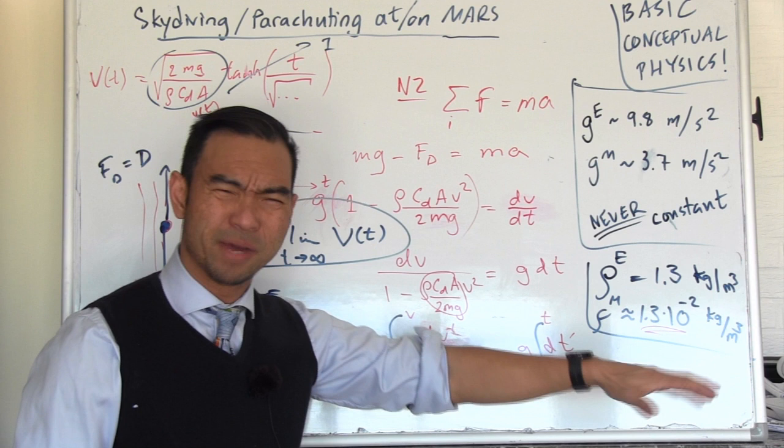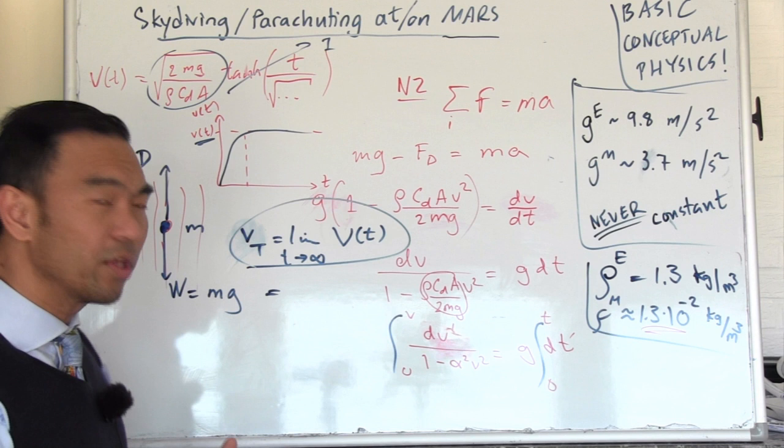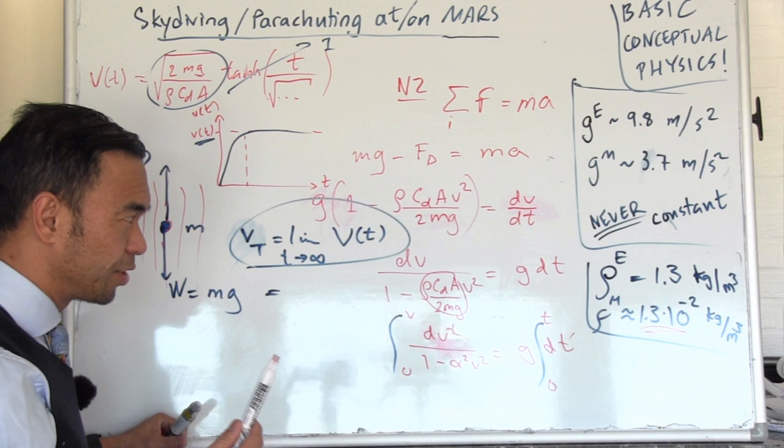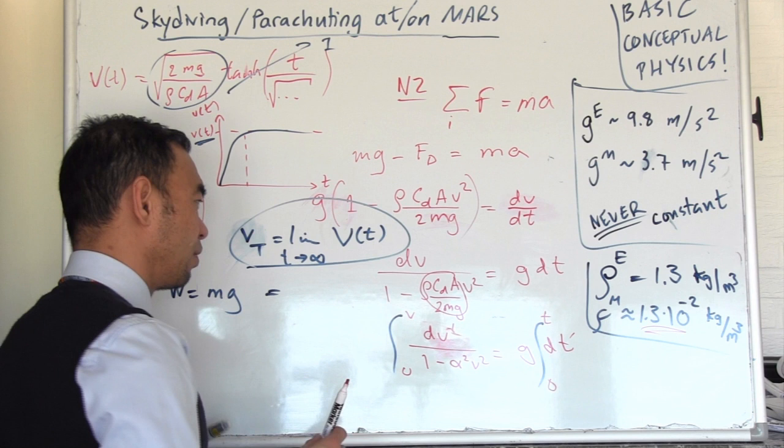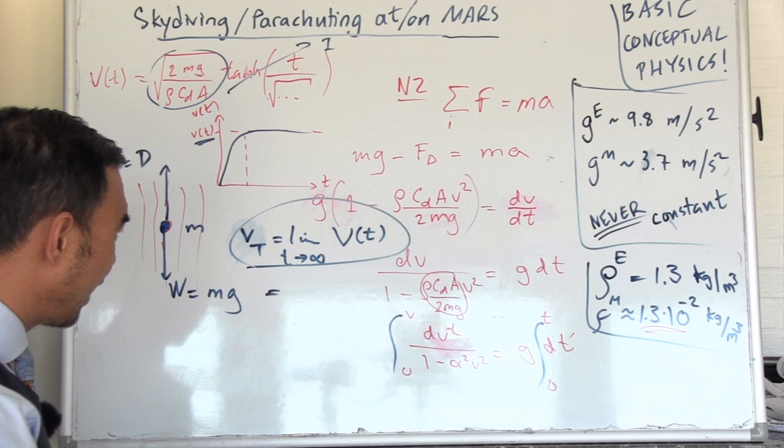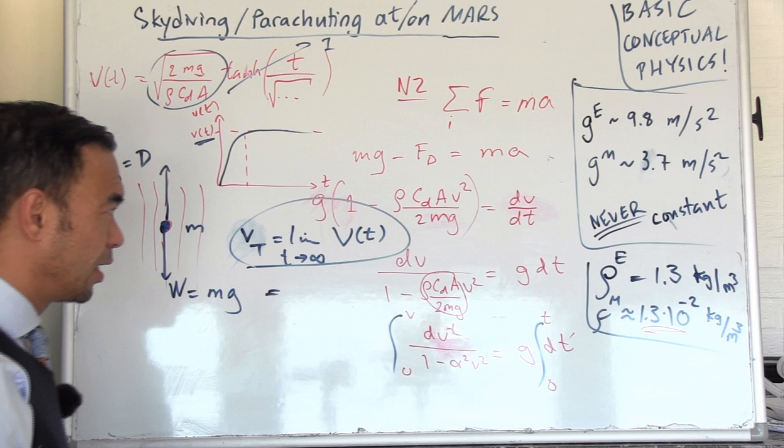It can be as low as 1.1 at minus 30 or something. I don't think you feel the difference when you're in free fall, but I think you do feel it when you fly your canopy or parachute when it's very cold. I did jump when it was minus 10 once, and I felt that the flying characteristics of my parachute were very different than when I jumped at 30 Celsius.